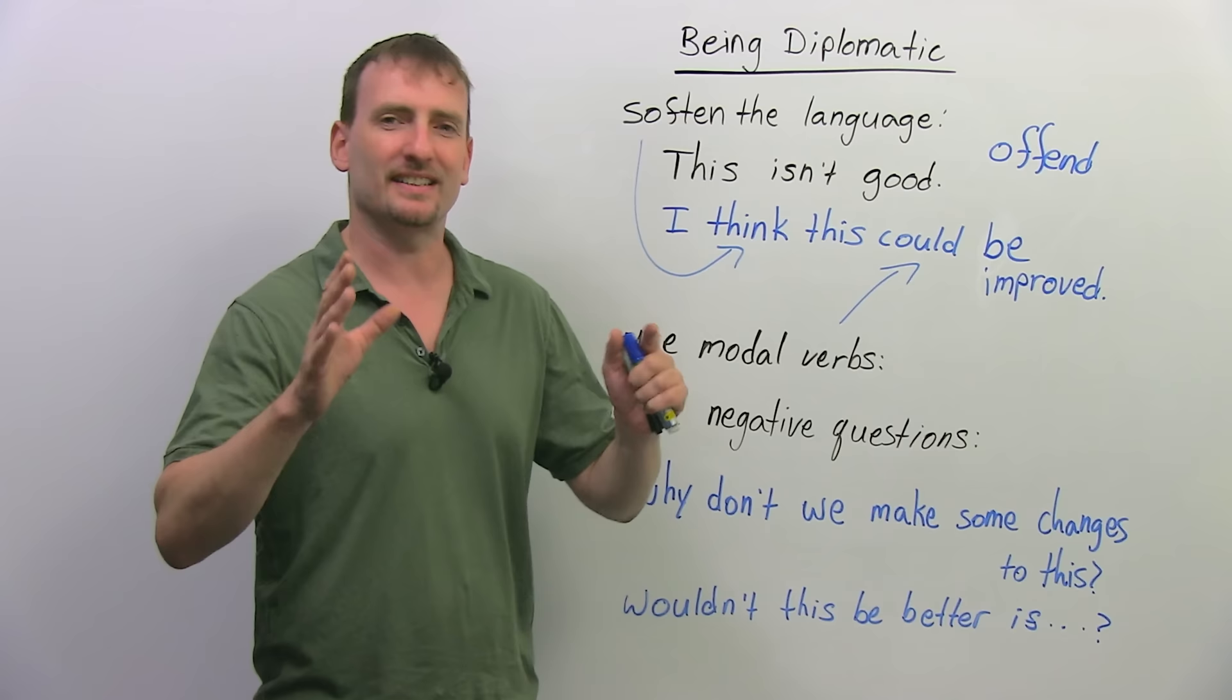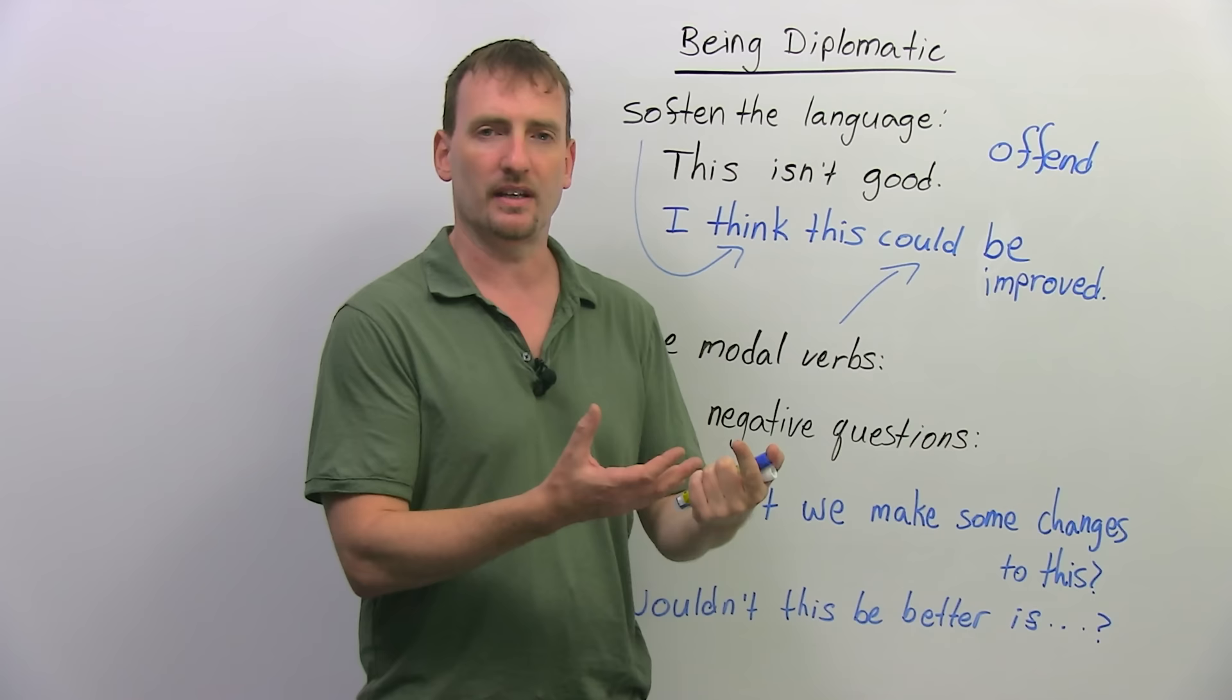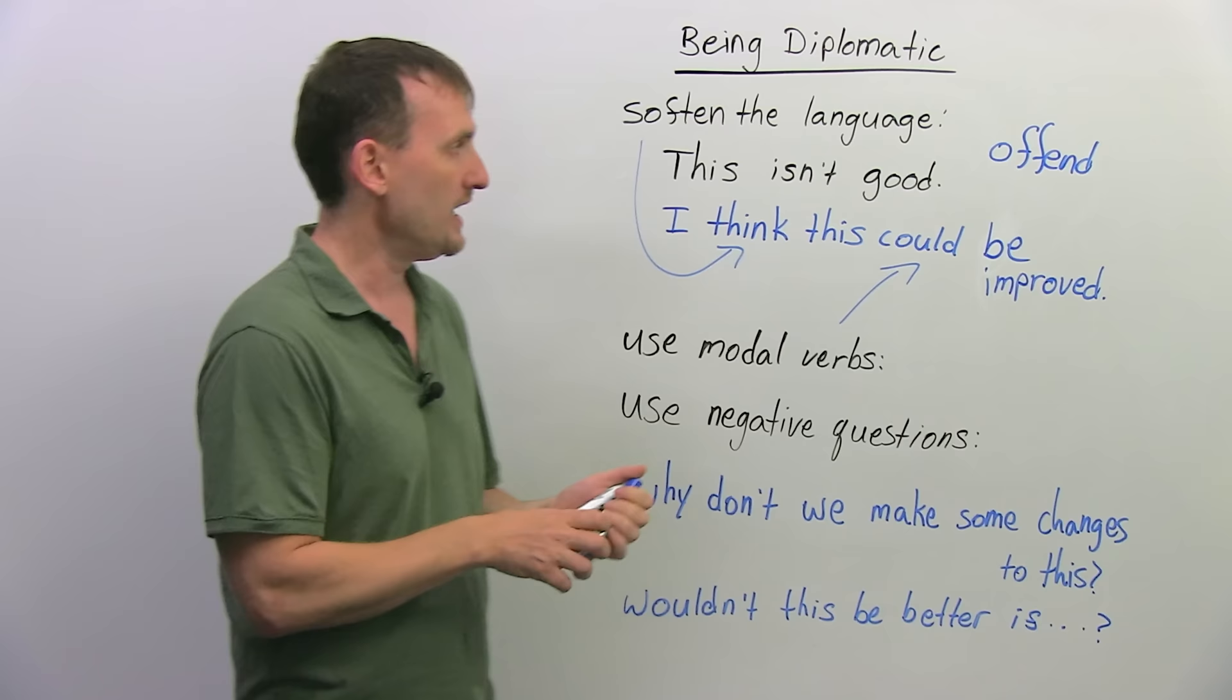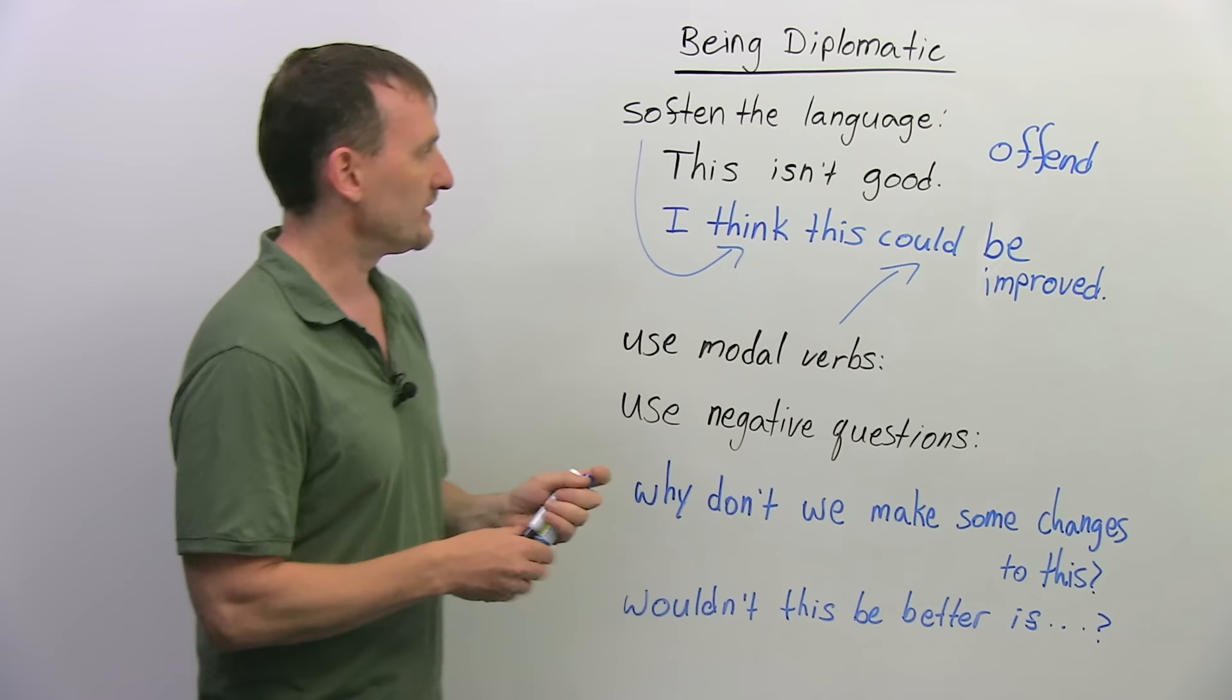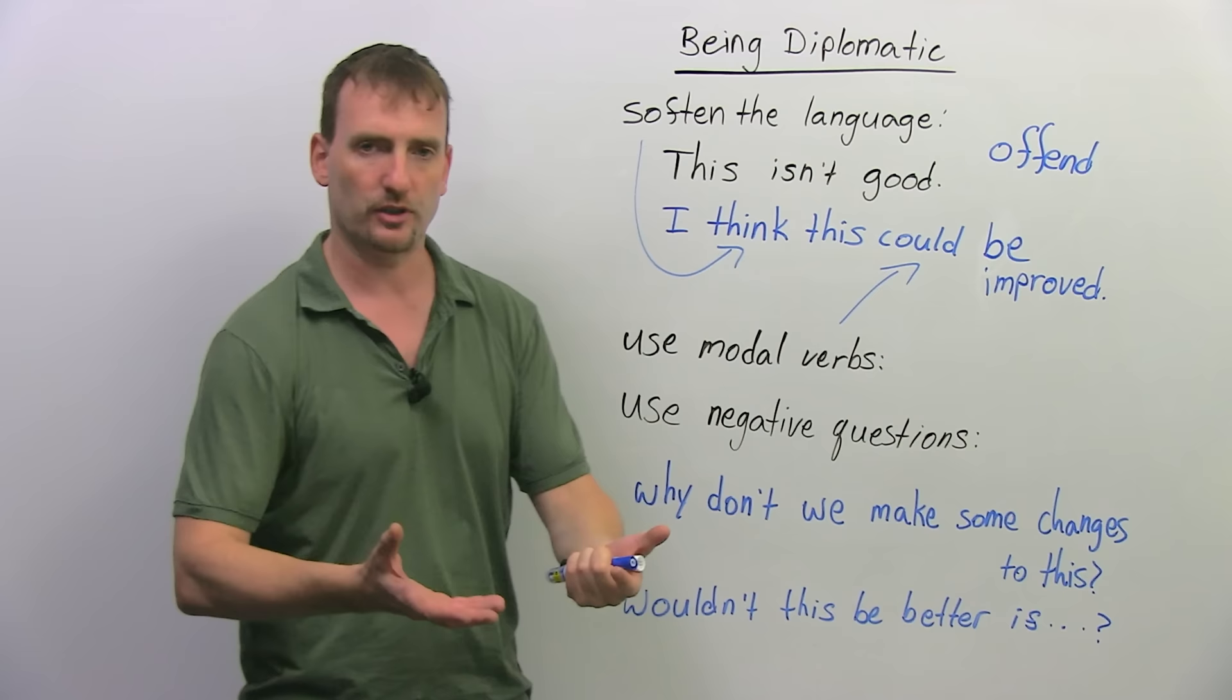Diplomatically basically means saying something in a more polite way, in a softer way. So, that's the first thing we want to learn how to do. We want to soften the language we use. So, instead of saying, this isn't good.